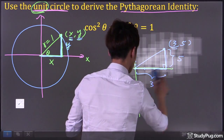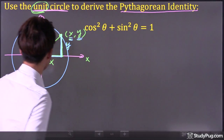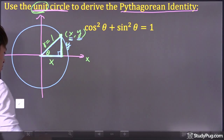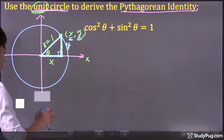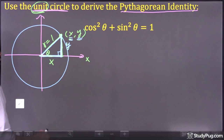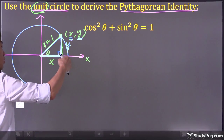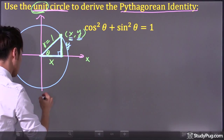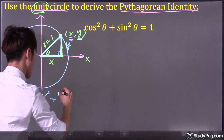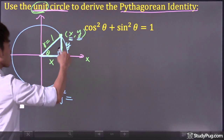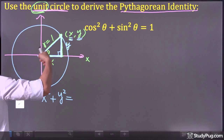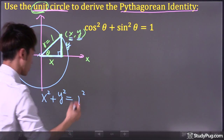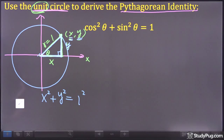Now I want to focus on this triangle and apply the Pythagorean theorem. Pythagoras tells us x squared plus y squared equals the hypotenuse squared. So we have x squared plus y squared equals one squared, because the hypotenuse is one — it's a unit circle.